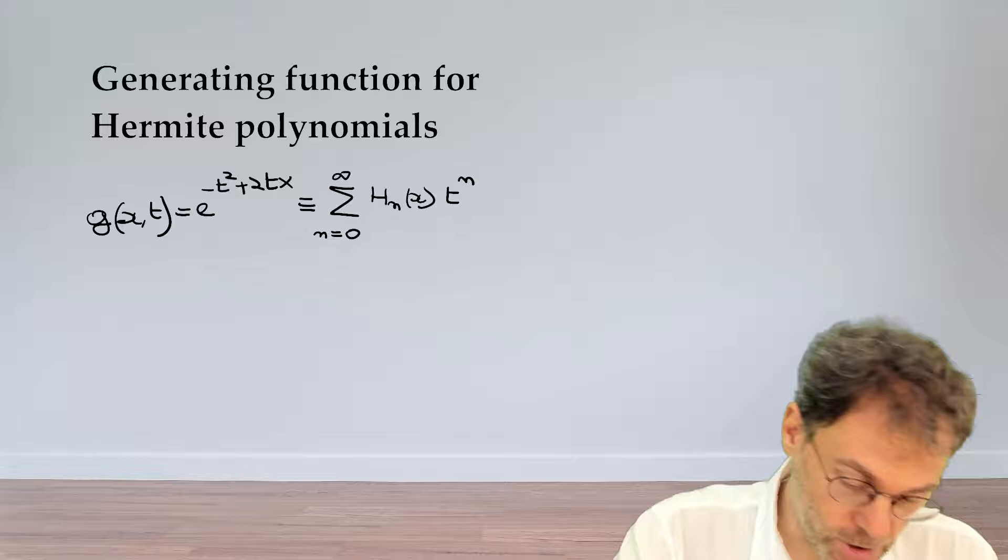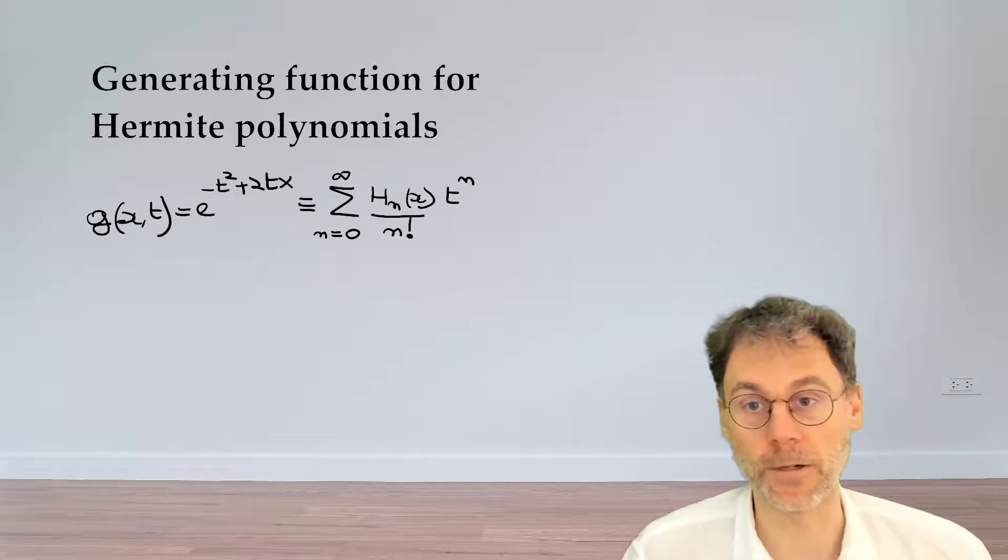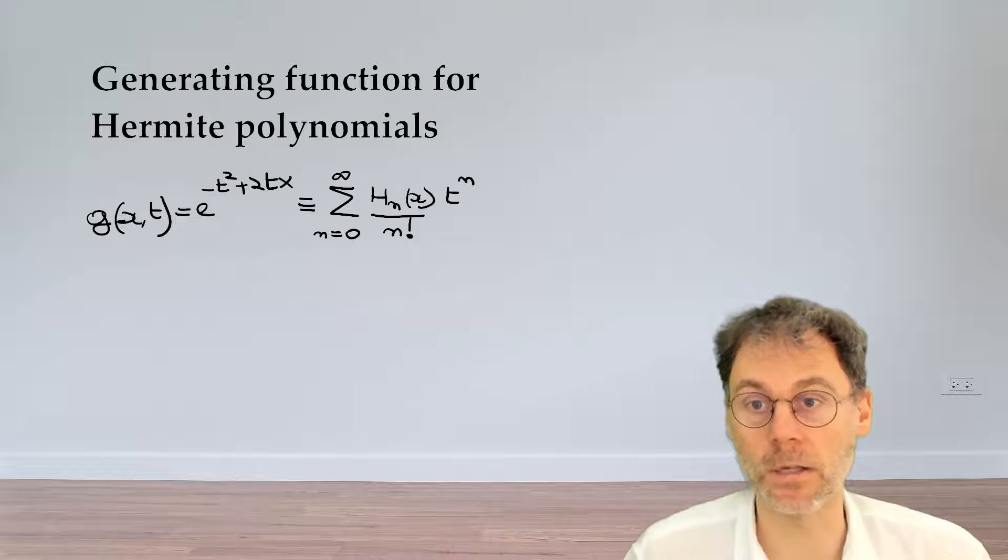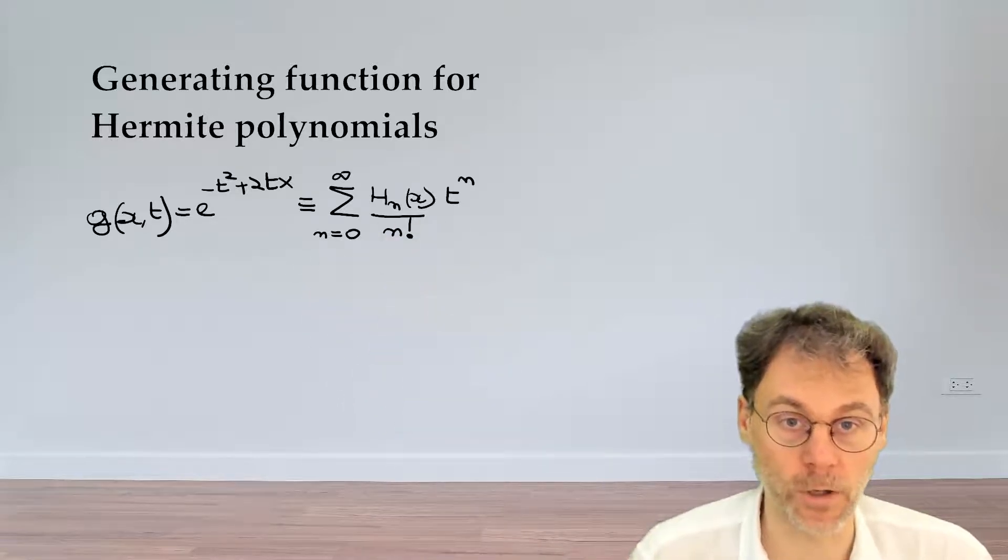There's a small cosmetic change that we introduce, and that's that we're going to divide this thing by n factorial. And if we do that, that will result in Hermite polynomials with nice integer coefficients.